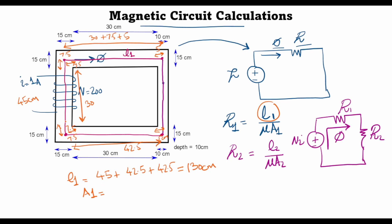The area A1 is 15 centimeters (width) multiplied by 10 centimeters (depth), giving 150 centimeters squared. For the second reluctance, the mean path length L2 is 7.5 + 30 + 7.5 = 45 centimeters. The area A2 is 10 centimeters (width) times 10 centimeters (depth), which equals 100 centimeters squared.